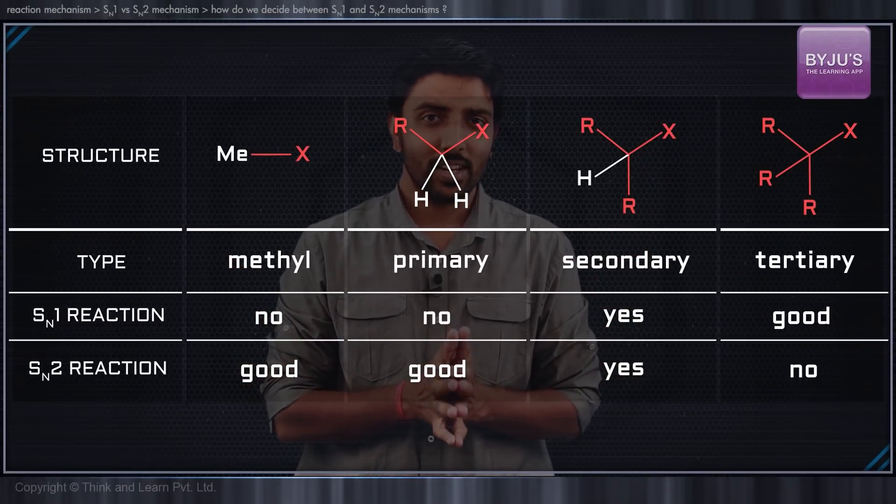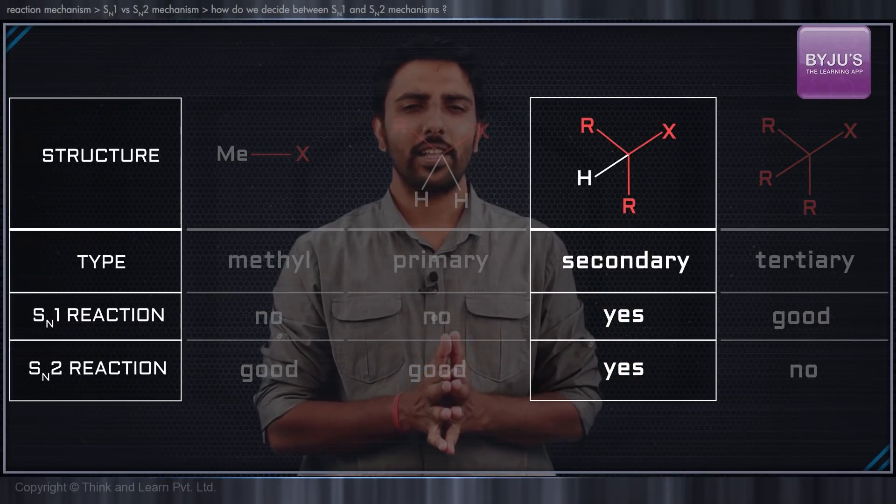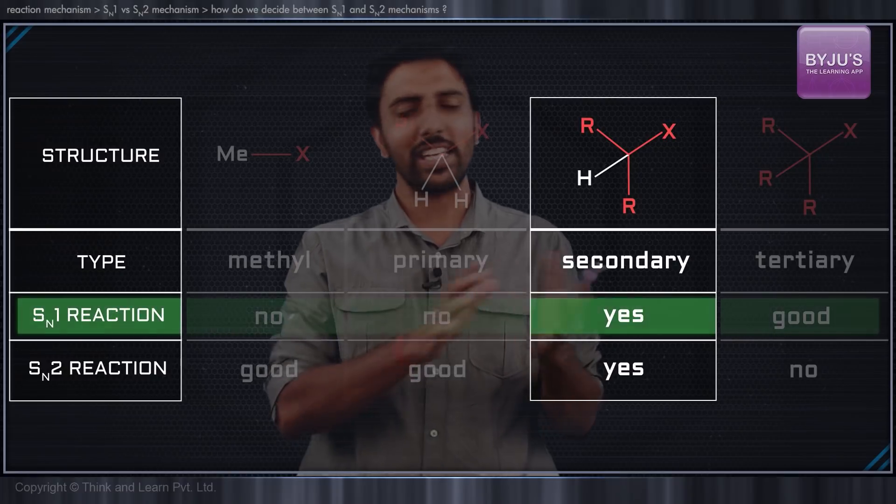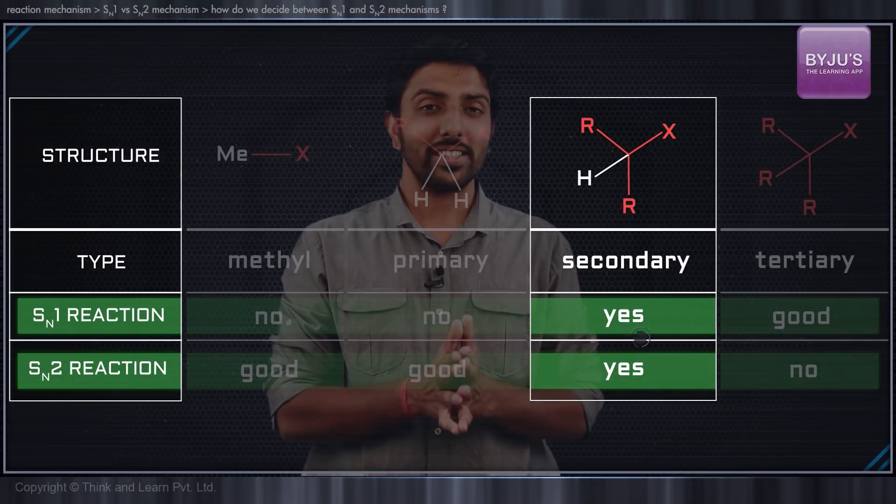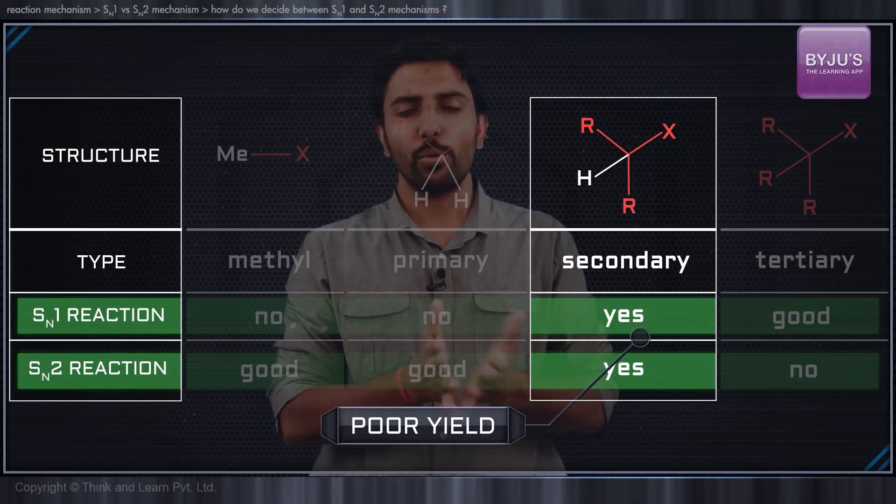As you can see from this table, the secondary alkyl halides can react either by the SN1 mechanism or the SN2 mechanism, but we see that in both cases the yield happens to be poor.